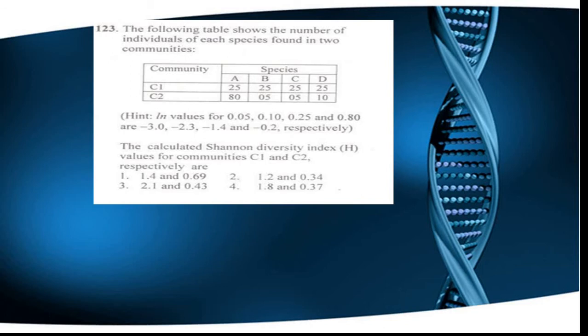For evenness, C1 is more even than C2 because the distribution of each species in C1 is very uniform. C2 contains 80, 5, 5, and 10 individuals across species, so they are not evenly distributed. We now need to calculate the Shannon Diversity Index for both C1 and C2.